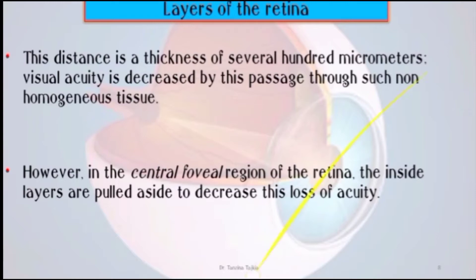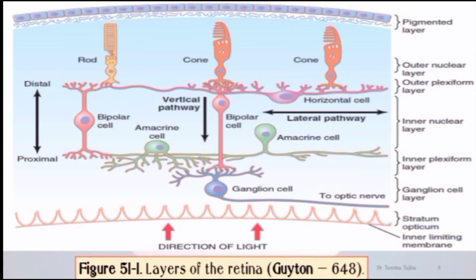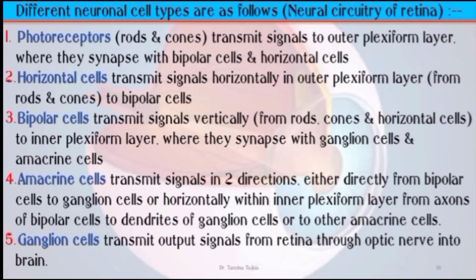Different neural cell types in the retina are as follows. First, photoreceptors transmit signals to the outer plexiform layer, where they synapse with bipolar cells and horizontal cells. Second, horizontal cells transmit signals horizontally in the outer plexiform layer to bipolar cells. Third, bipolar cells transmit signals vertically into the inner plexiform layer, where they synapse with ganglion cells and amacrine cells.